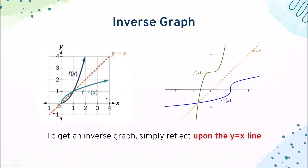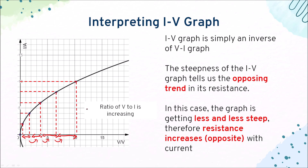Let me briefly talk about what an inverse graph is. To get an inverse graph, you invert it along the Y equals X line — so if the graph is f(x) like this, the inverse is reflected along the Y equals X line. My tip: if you are doing an IV graph, simply reverse it first — draw the VI graph of the inverted IV graph, then interpret the resistance based on the stiffness of that graph, and you will be able to tell what the resistance is like.